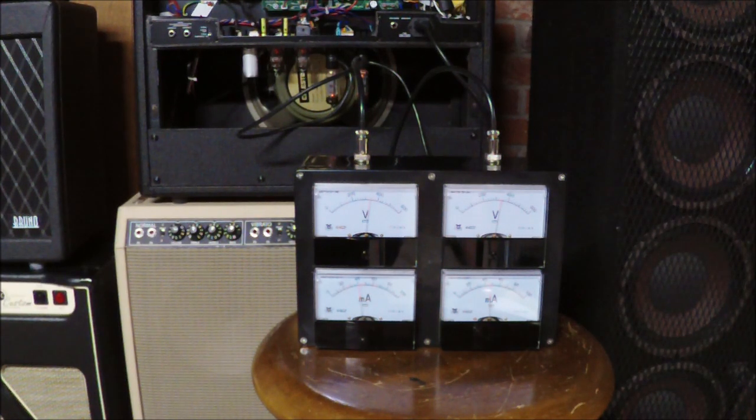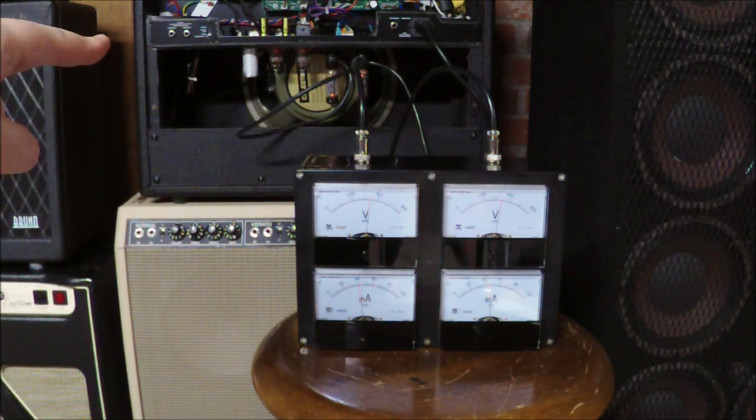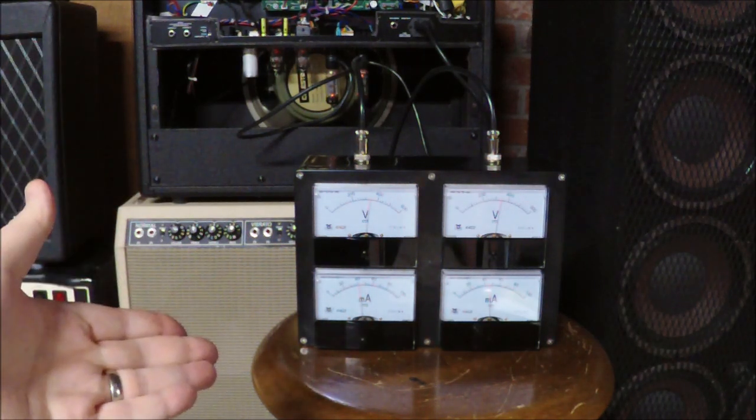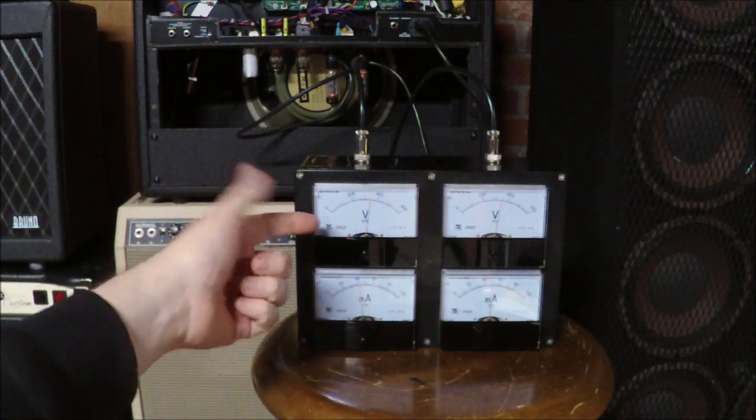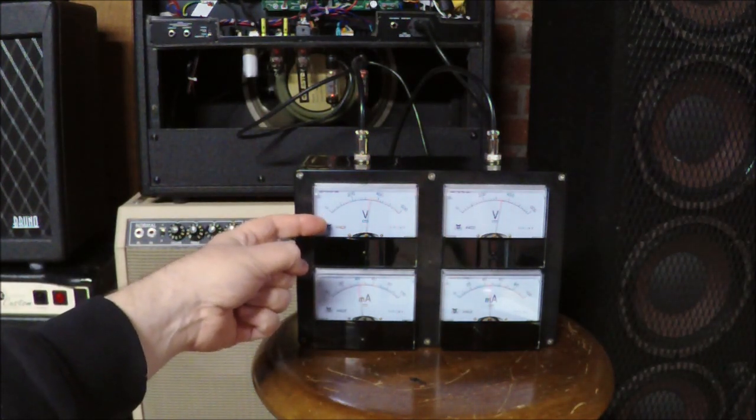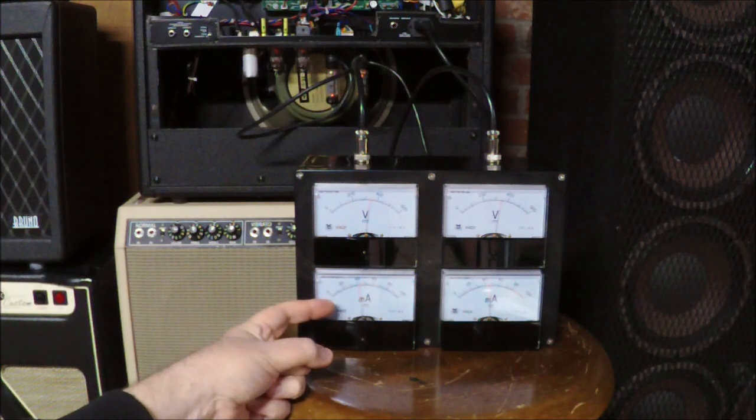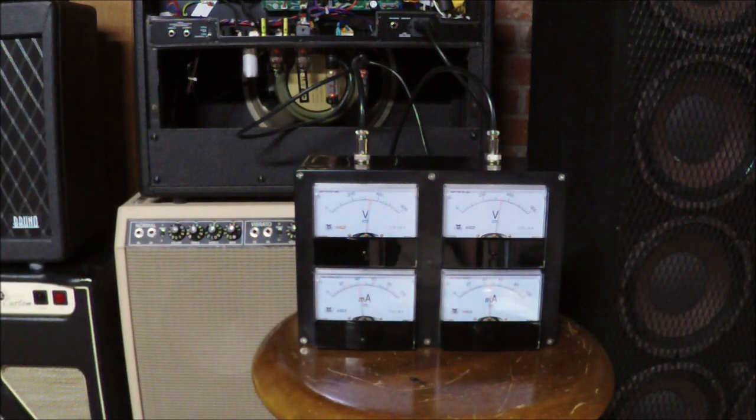But yeah, easy to change the probes, plug in your tubes, turn it on, read the Bias. Cathode to plate voltage, plate current. Easy.